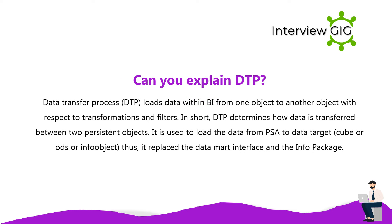Can you explain DTP? Data Transfer Process (DTP) loads data within BW from one object to another with respect to transformations and filters. In short, DTP determines how data is transferred between two persistent objects. It is used to load data from PSA to a data target — cube, ODS, or InfoObject. Thus it replaced the data mart interface and the InfoPackage.